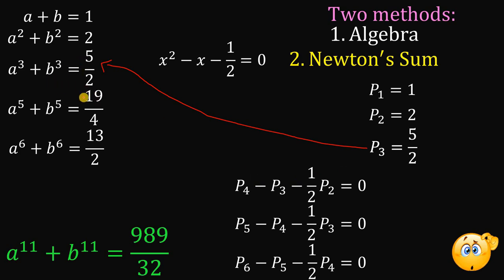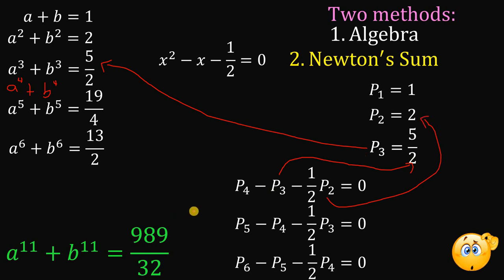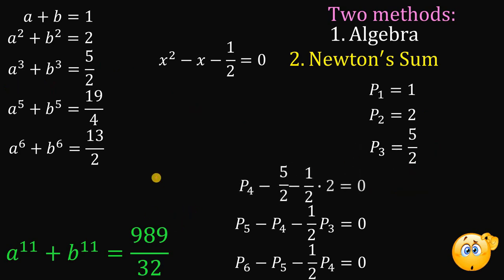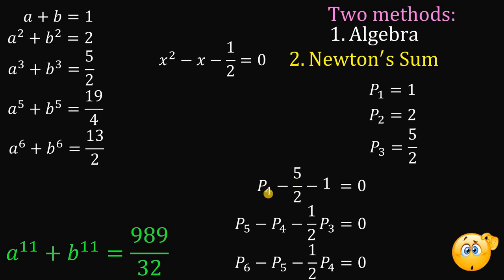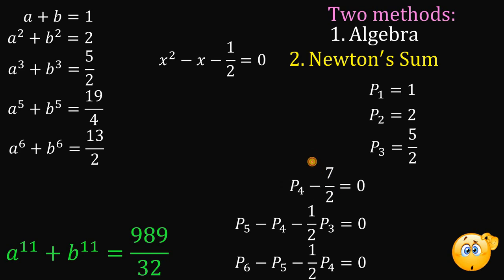How about p sub 4? Using Newton's Sum with p sub 3 equals 5 over 2 and p sub 2 equals 2, we solve for p sub 4. Simplifying: negative 1 half times 2 is negative 1. Then negative 5 over 2 minus 1 is negative 7 over 2. Adding 7 over 2 to both sides, we get p sub 4 equals 7 over 2.